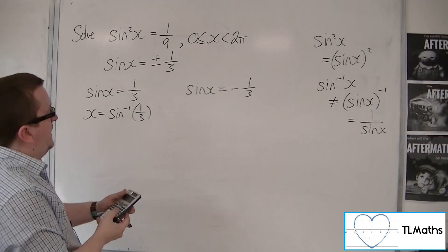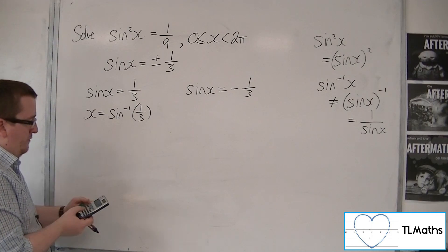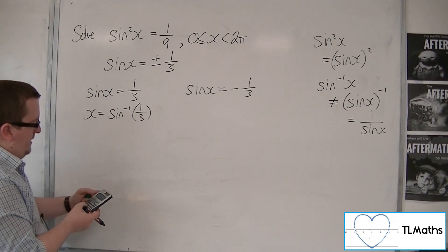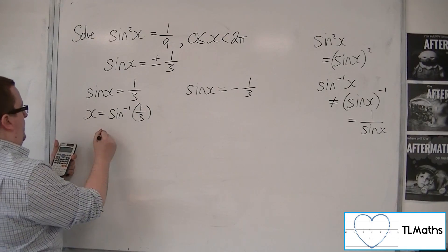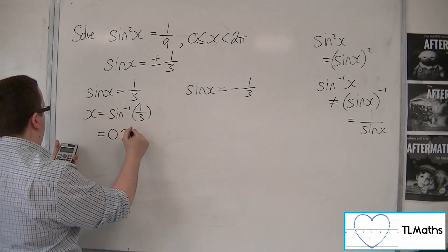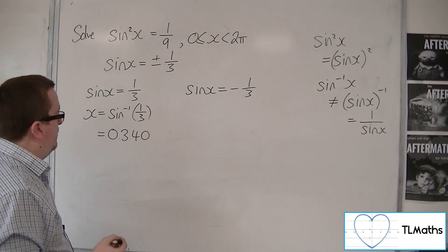So making sure that my calculator is in radians this time. So shift mode and then number 4, radians. Inverse sine of 1/3 is 0.340 to three significant figures or three decimal places.